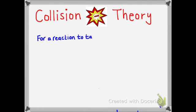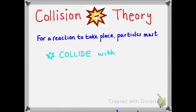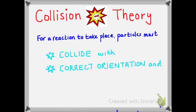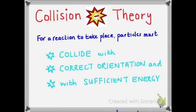The collision theory states that for a reaction to take place, particles must do three things. Firstly, they must collide. Secondly, they must collide with the correct orientation. And thirdly, they must collide with sufficient energy. That's the collision theory: particles must collide with correct orientation and with sufficient energy.